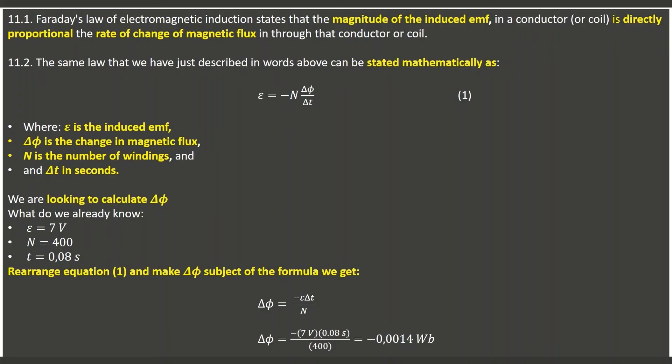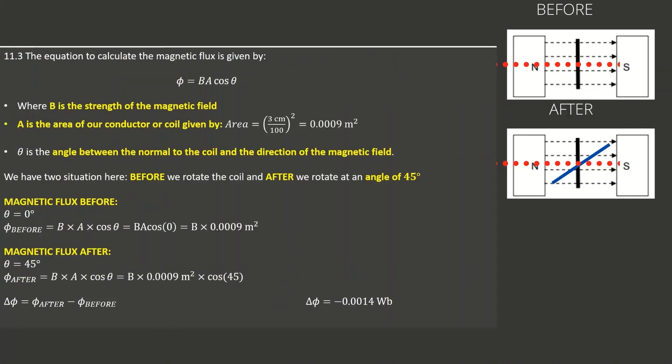Question 11.3 asks us to determine the magnitude of the magnetic field. We use the magnetic flux equation discussed in Part 2: magnetic flux equals B multiplied by area A multiplied by cosine of angle theta (Φ = BA cosθ). Theta is the angle between the normal to the induction coil — the red dotted line — and the magnetic field. The coil is square with side length 3 centimeters. To find the area, we square the side length, first converting from centimeters to meters by dividing by 100.